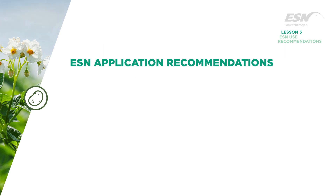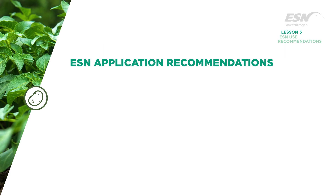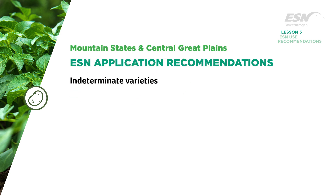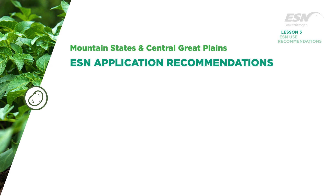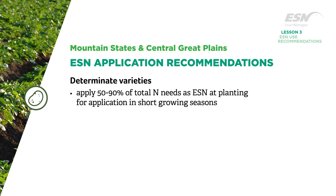For ESN application for indeterminate varieties in the Mountain States and the Central Great Plains, apply 75 to 90 percent of nitrogen as ESN at emergence and supplement with fertigation as needed.